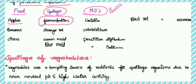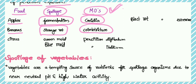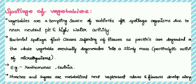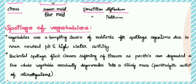Here are some fruits, their spoilage processes, and the causing microorganisms. Apples: spoilage by fermentation, causing microorganism is Candida. Bananas: storage rot, causing microorganism is Colletotrichum. Citrus: green mold, causing microorganism is Penicillium digitatum. Next comes spoilage of vegetables.